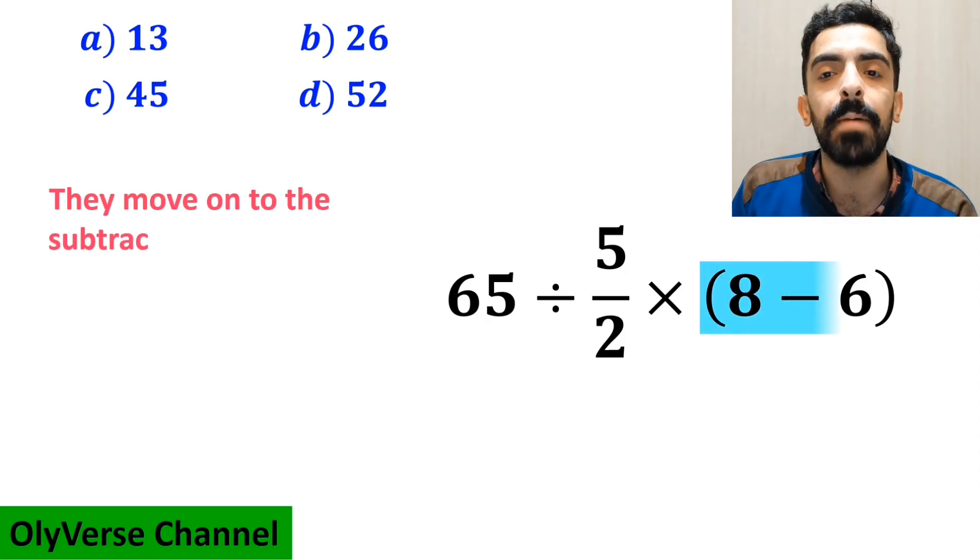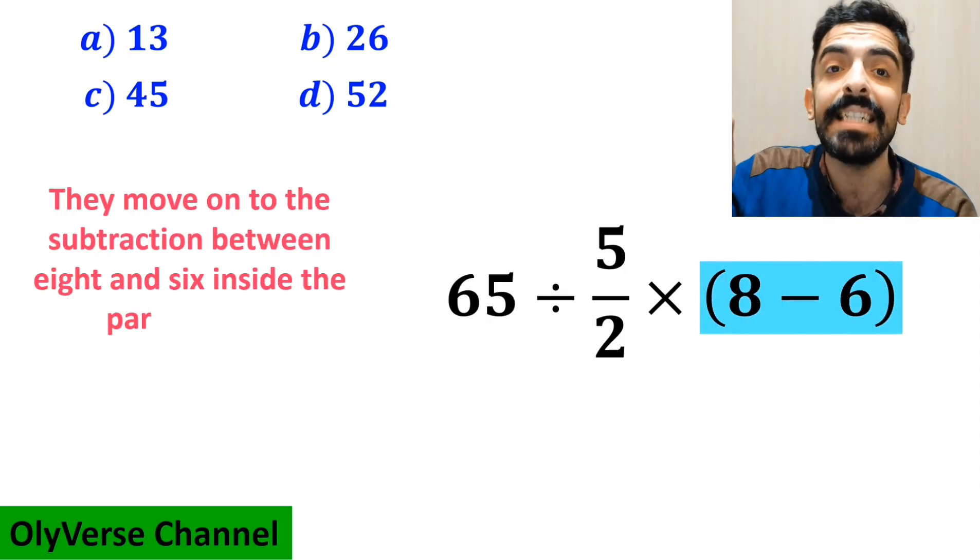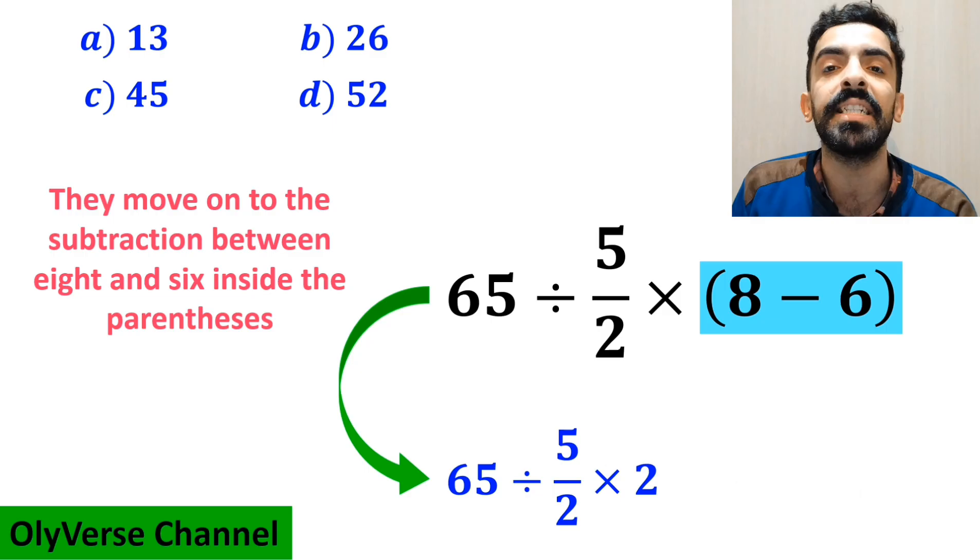In the next step, they move on to the subtraction between 8 and 6 inside the parenthesis and simplify this expression to 65 divided by 5 over 2 times 2.